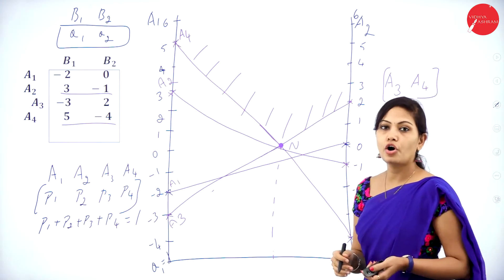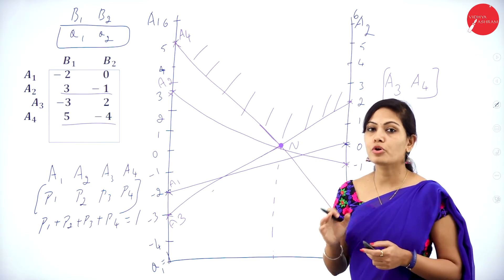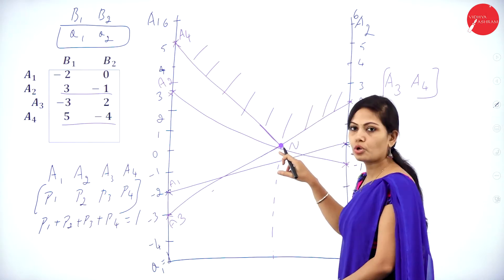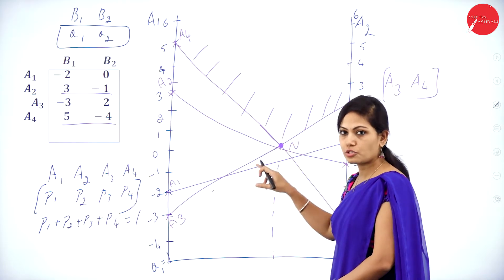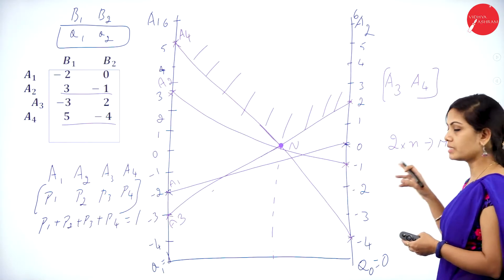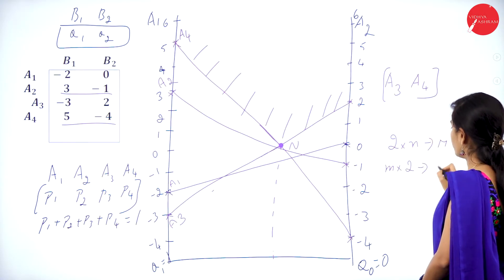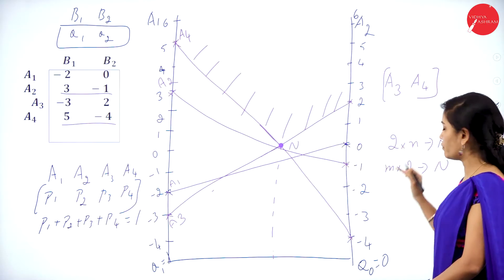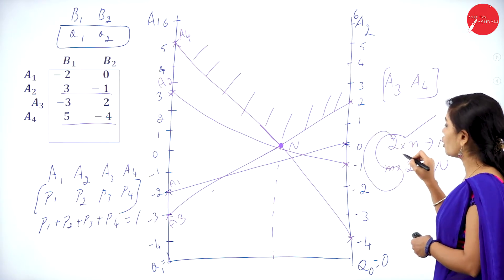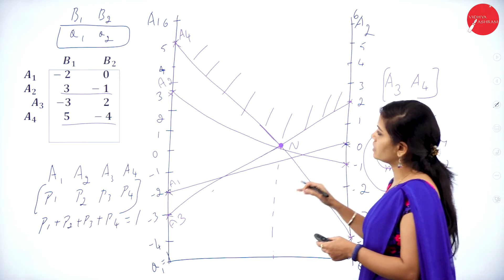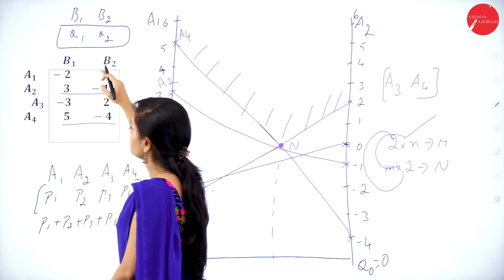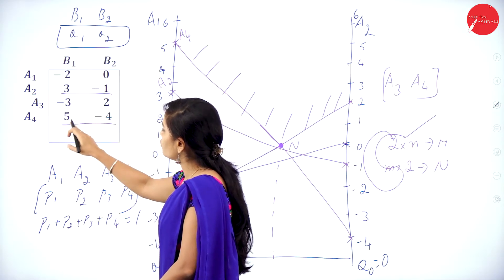So this is the method for m×2 matrix. Select the upper part and the least point — the lowest point here is intersected by A3 and A4. In 2×n games we selected the highest point (maximum N), whereas in m×2 games we select the lowest point (minimum N). That is the key difference. The points used are (−3, 2) for A3 and (5, −4) for A4.